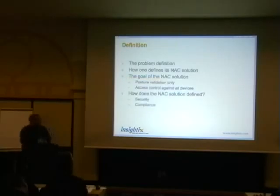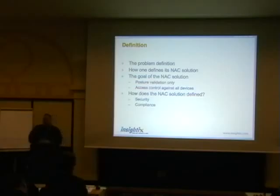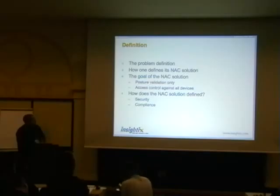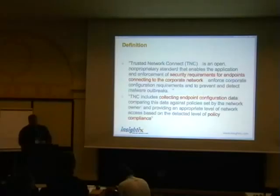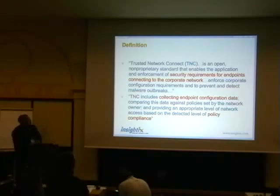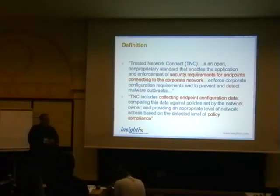The problem, as I said earlier, first is with the definition — how we can actually define what's network access control. Is this posture validation only? Is this done against all devices? And is it a security solution or a compliance solution? I've set here an example with the definition that the Trusted Network Connect of the TNC is actually saying. As you can read — highlighted in red — security requirements for endpoints connecting to the corporate network, collecting endpoint configuration data, policy compliance.